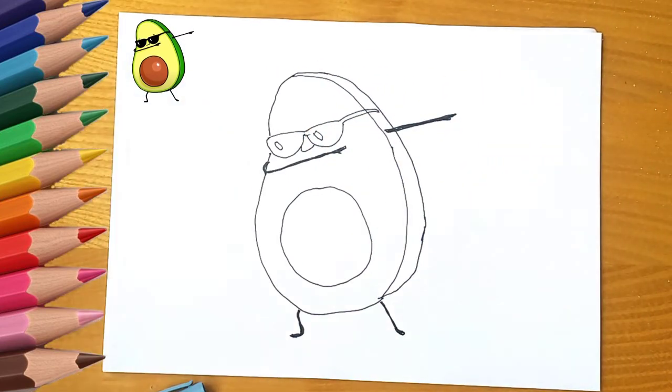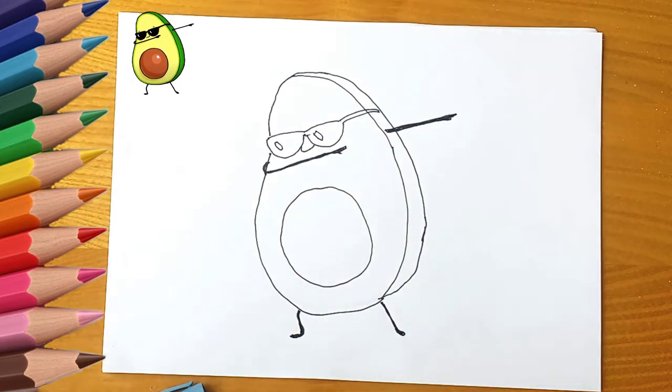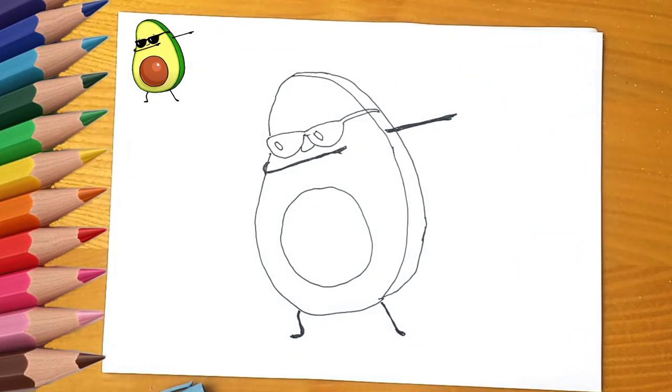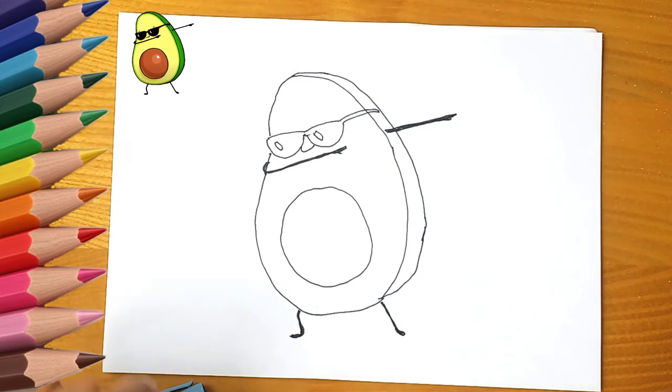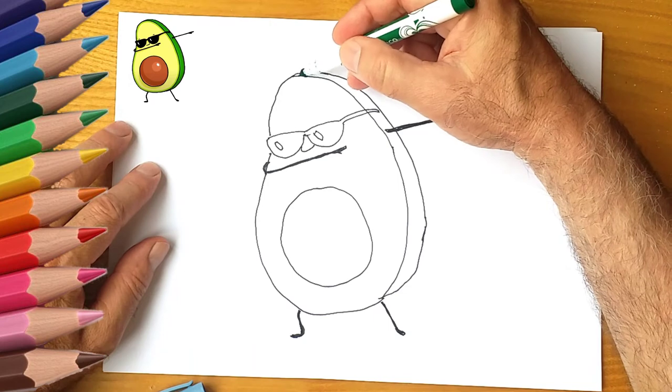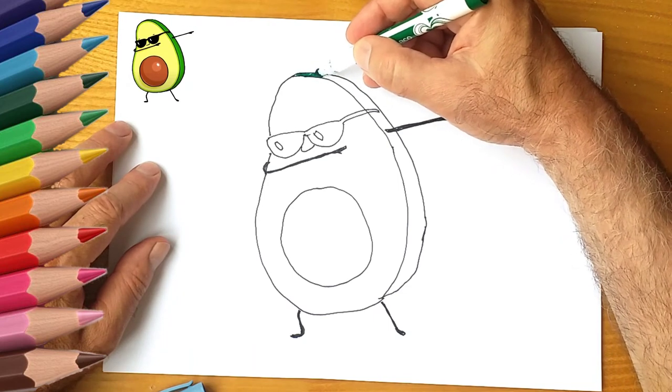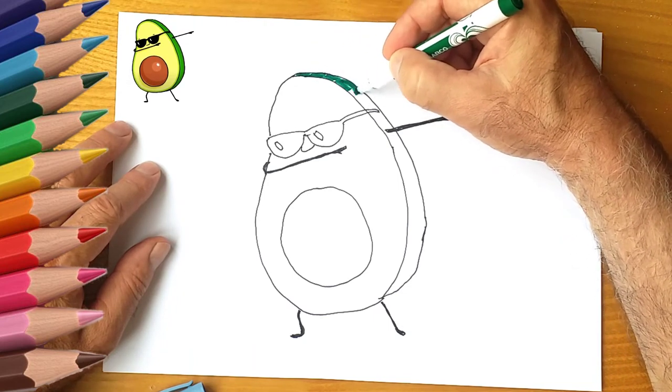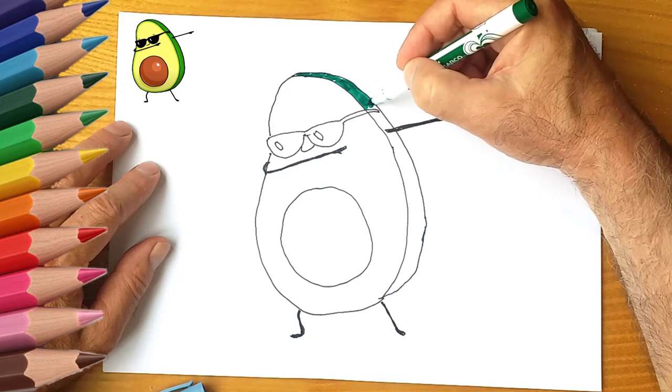When you work, draw your right. And the avocado bone is brown. Draw the middle of the avocado in brown. See again how to draw an avocado.